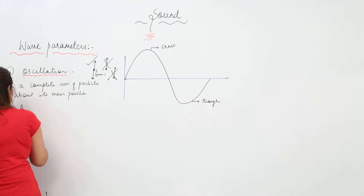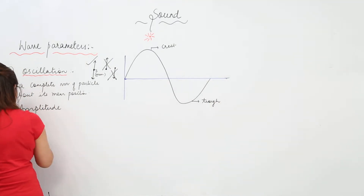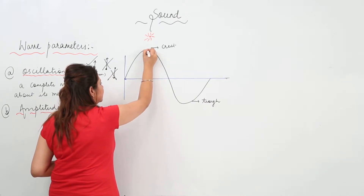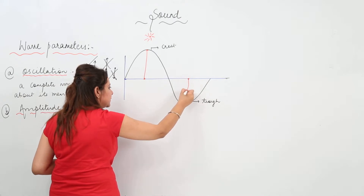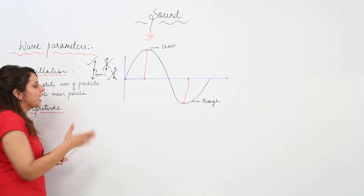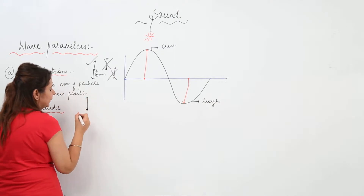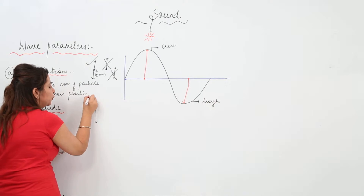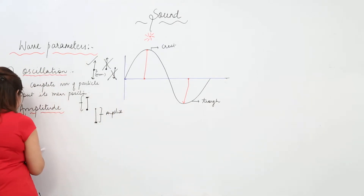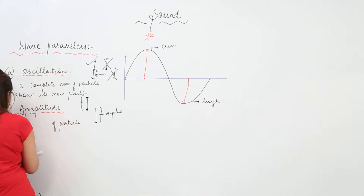The second parameter is amplitude. What is amplitude? Suppose I have a particle here — the peak shows how much it can move up, and the maximum height it can reach downward. So amplitude is the maximum displacement of a particle from its mean position, either in the upward direction or in the downward direction. In both cases, it is called amplitude.